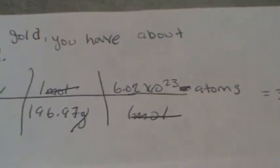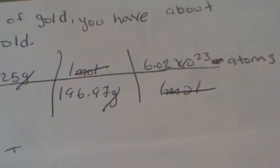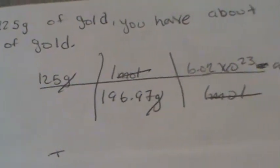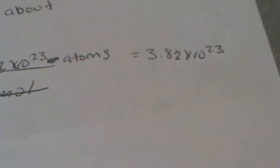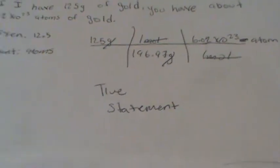And we put one mole at the bottom, we cancel out the moles and our grams, multiply across and divide to the bottom. Our final answer will be 3.82 times 10 to the 23rd. So this statement is a true statement.